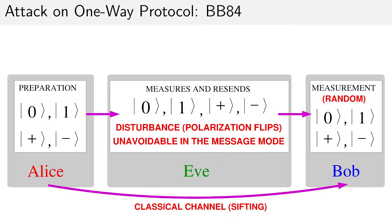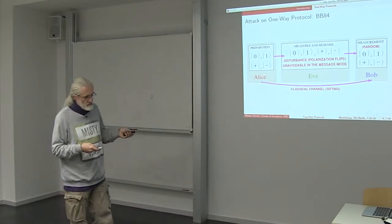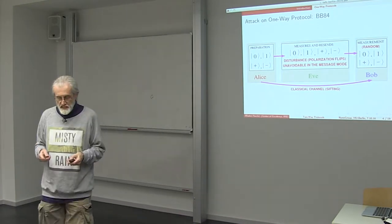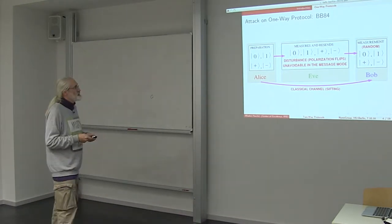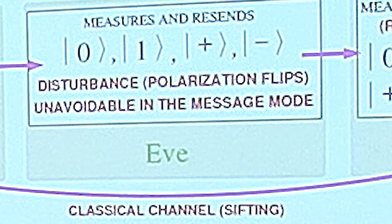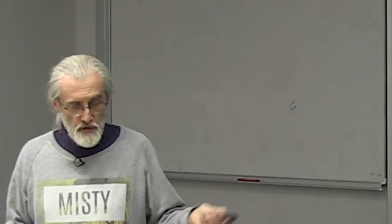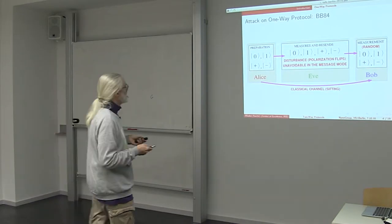That can be done in many different ways. I'll just present here a basic well-known attack which consists in measuring and resending. During such an attack, Eve introduces disturbance in the message mode, which is in the case of BB84 the only mode.